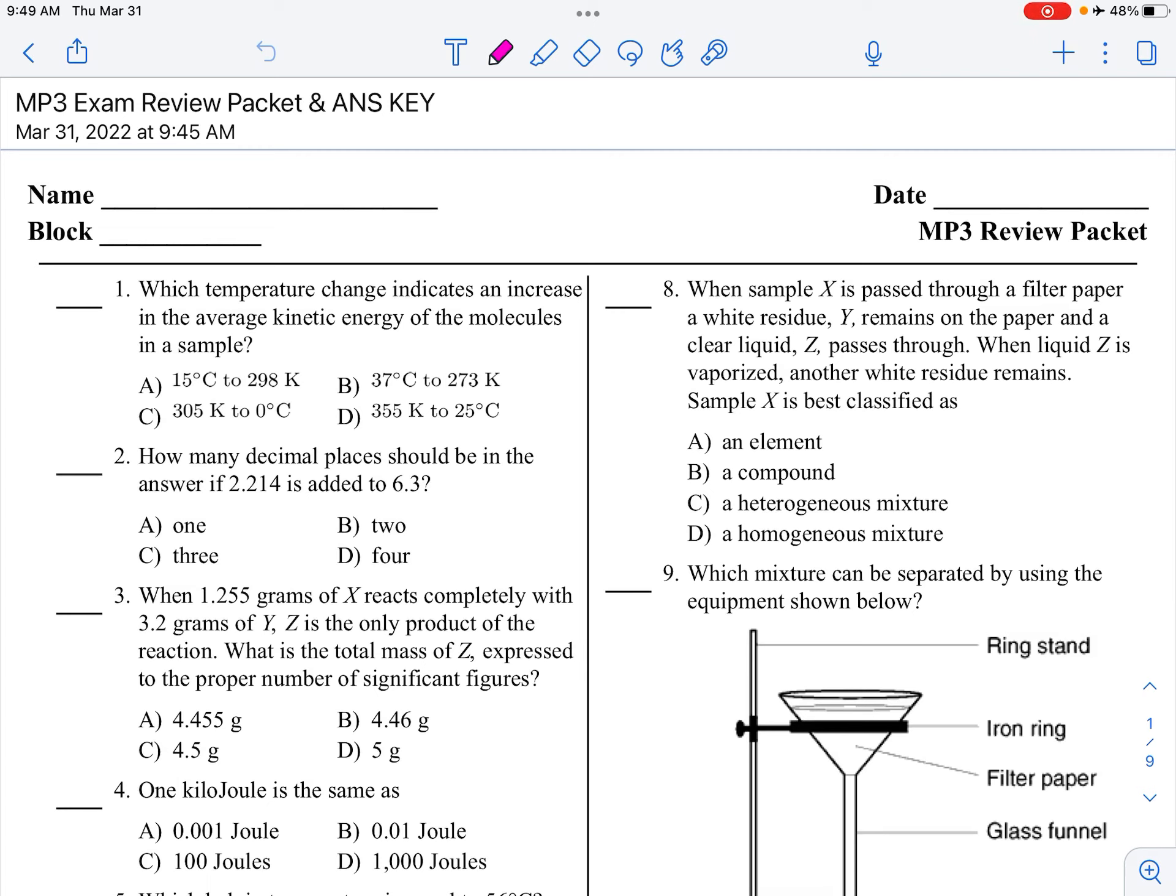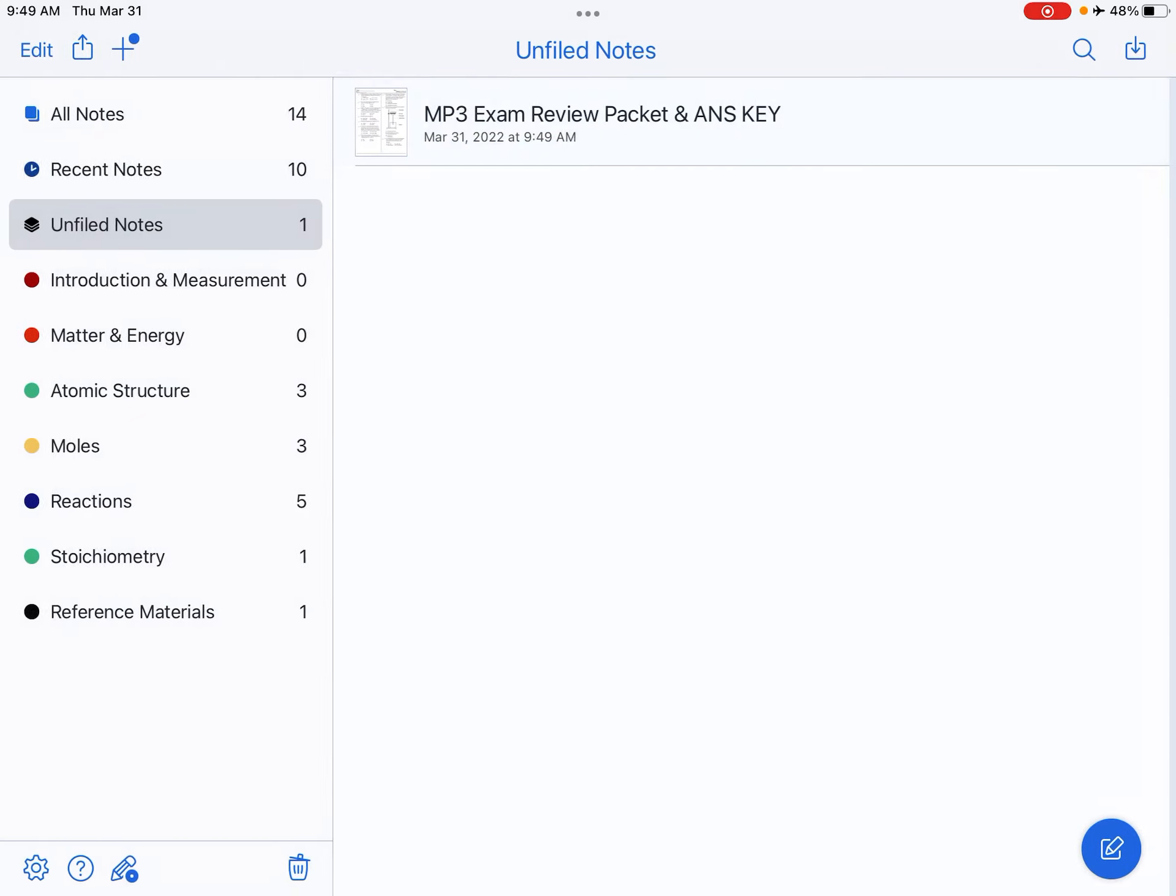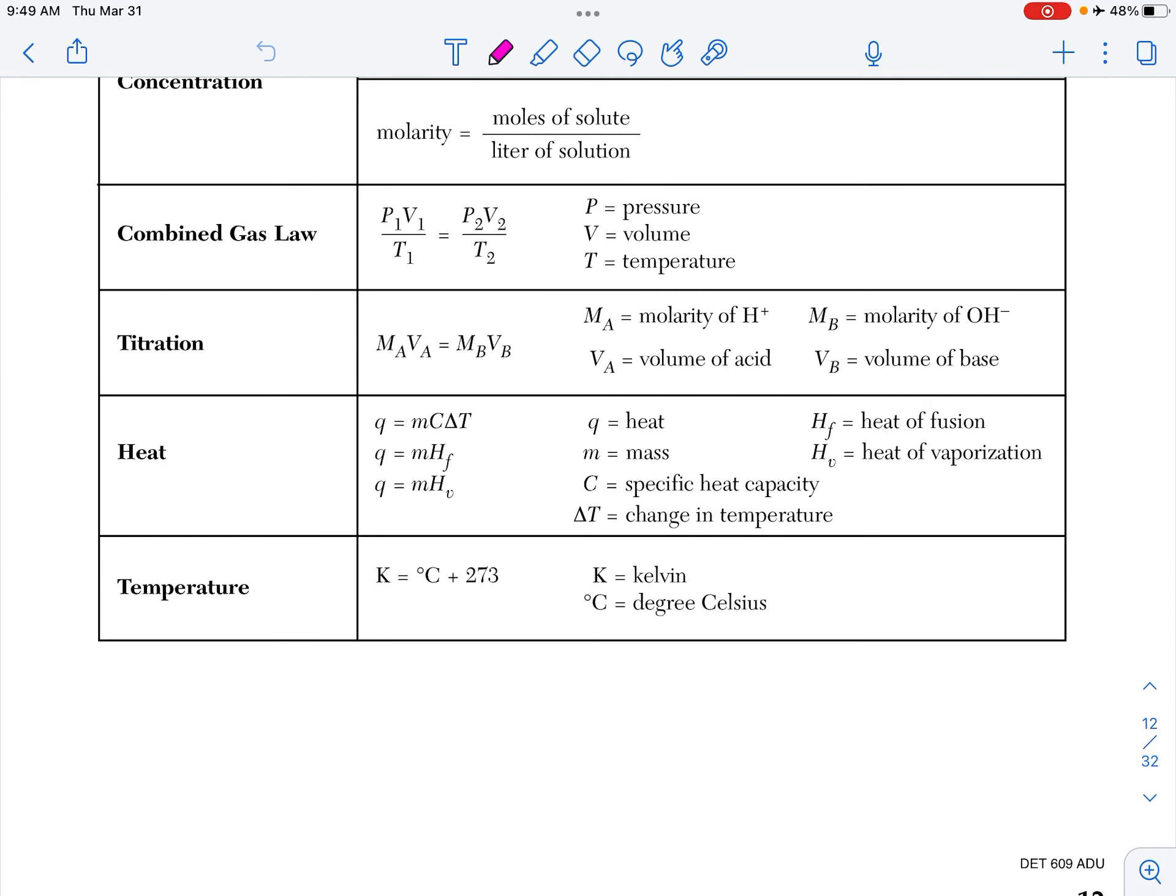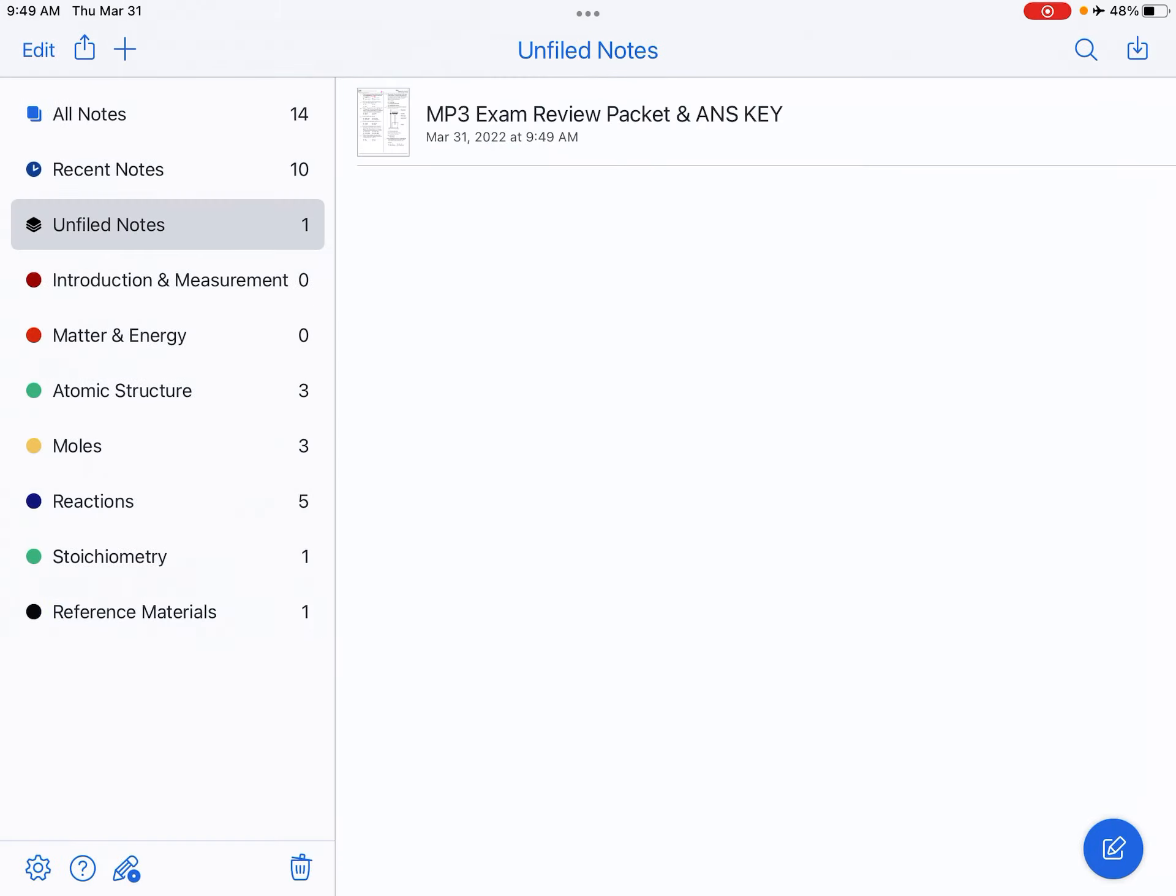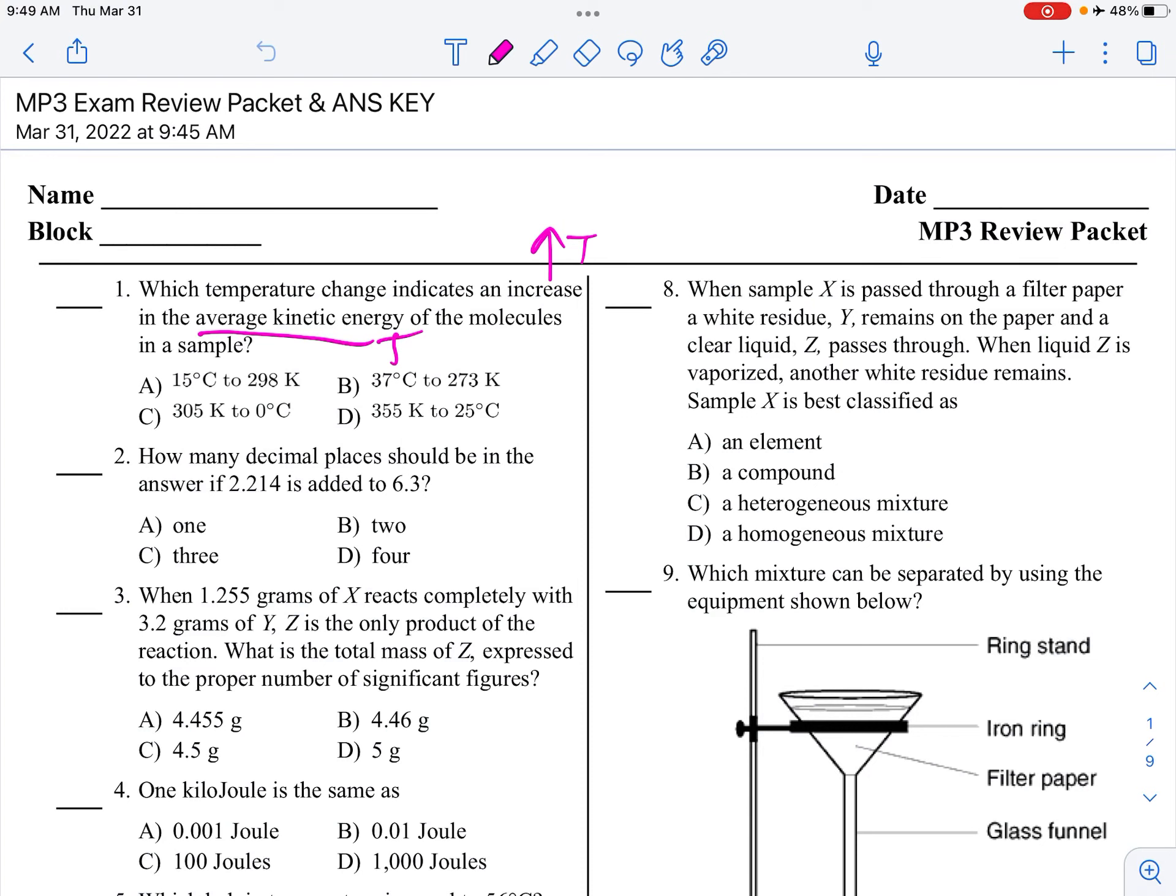Which temperature change indicates an increase in the average kinetic energy of the molecules in the sample? Average kinetic energy is our key for temperature, so we want an increase in temperature. First of all, I have a whole bunch of different temperature scales. I have Kelvin and Celsius. We need to make them all the same. So here we are on table T. The conversion between Kelvin and Celsius is adding 273 to anything Celsius. So let's go back, and let's make everything Kelvin. So 15 plus 273 is 288. So 288 to 298 is an increase. That's probably our answer, but let's just make sure.